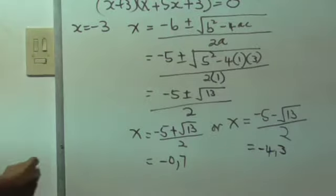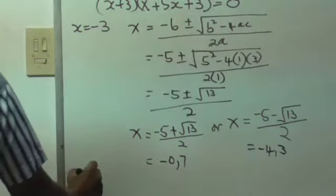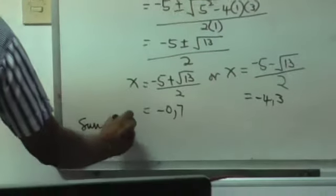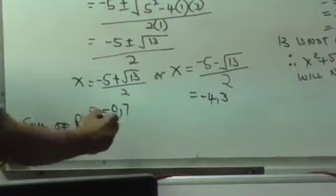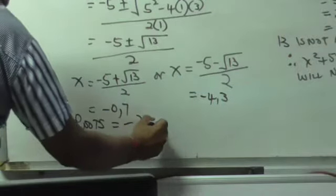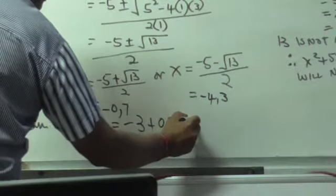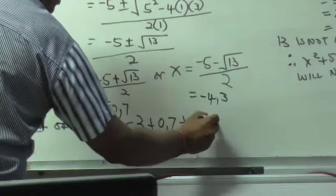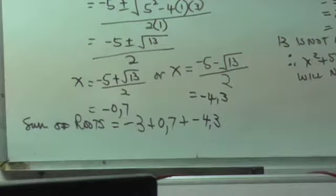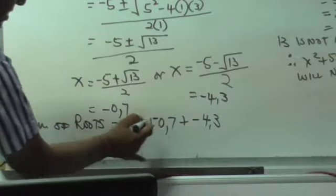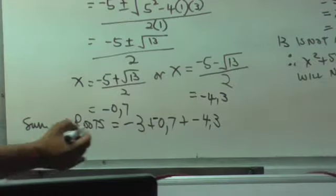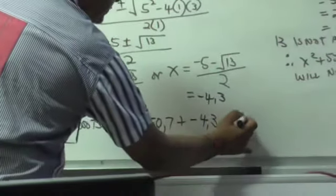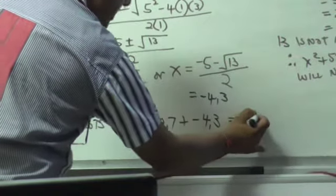So the sum of the roots, the sum of the roots is equal to, we have to add all the roots up, minus three plus zero comma seven plus negative four comma three. Sorry, this was negative, this is negative, plus negative zero comma seven.